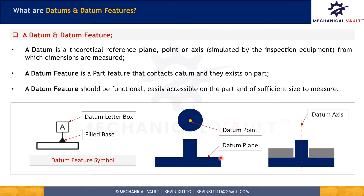The second criterion is that the datum feature must be easily accessible. Imagine a cutout or a hole that is a little deep, and we are using the bottom diameter of that cutout as the datum feature. If the inspection probe cannot reach the bottom, we will not be able to establish it as our datum. So the datum feature we choose must be easily accessible to the inspection equipment.